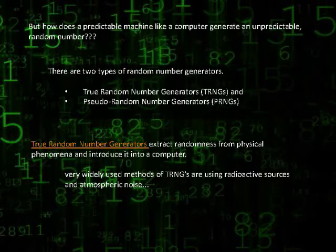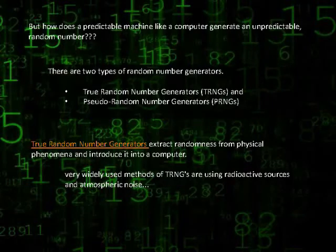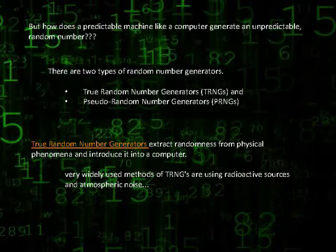There are two types of random number generators: True Random Number Generators (TRNGs) and Pseudo-Random Number Generators (PRNGs). In our research we focused on pseudo-random number generators, but it would be useful to have an idea about true random number generators as well.